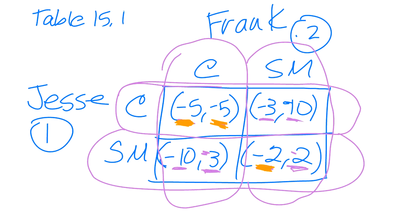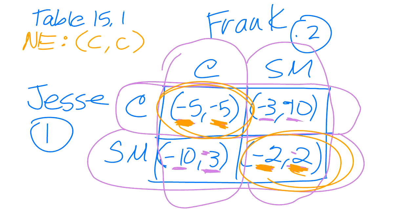And anywhere you see both of the numbers underlined in orange, that's what we call a mutual best response. That would be a Nash equilibrium. So I'm going to circle those. So those are our two Nash equilibrium, which I'll put N-E for Nash equilibria, would be confess, confess, both of them confess, or stay mum for both.